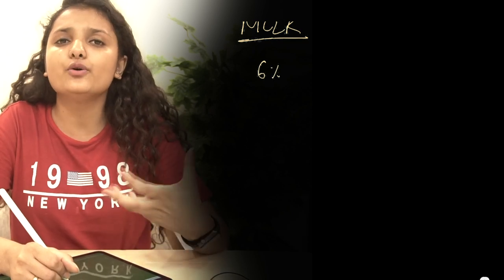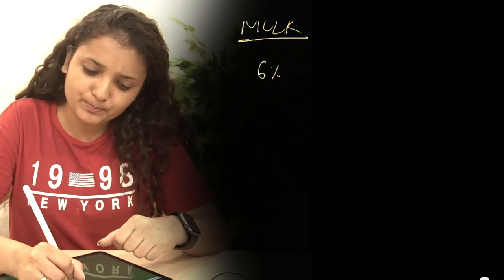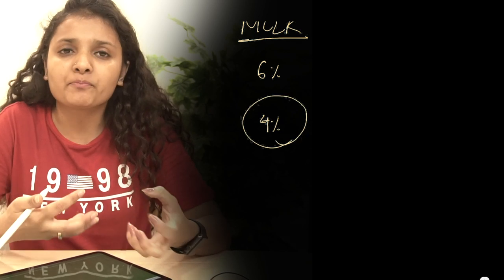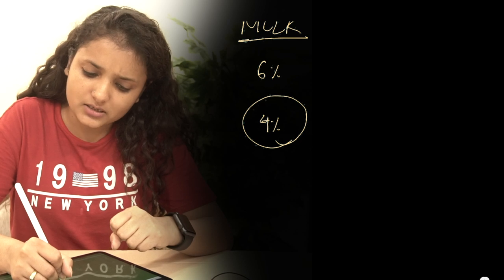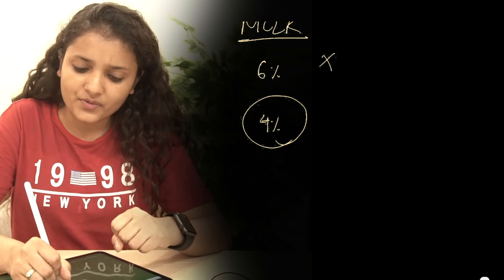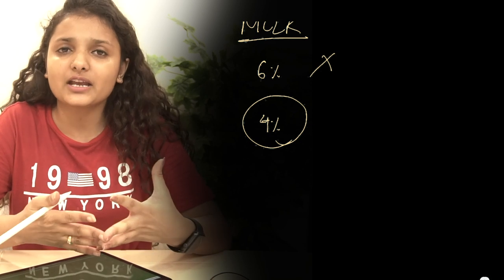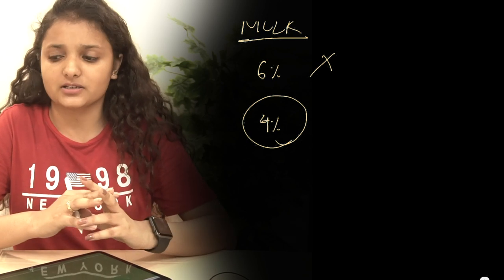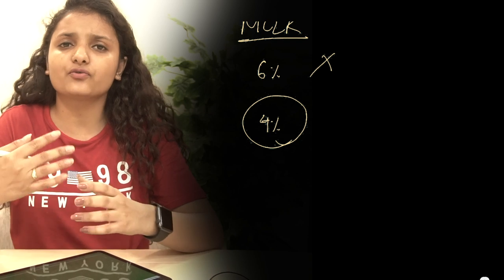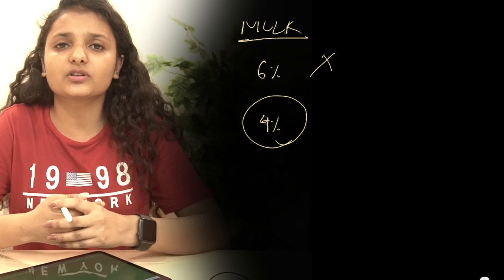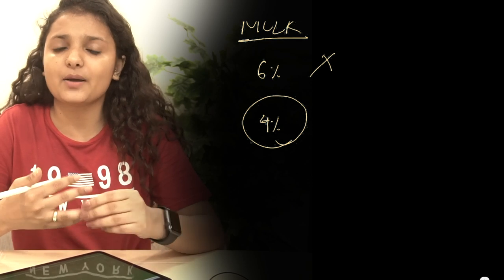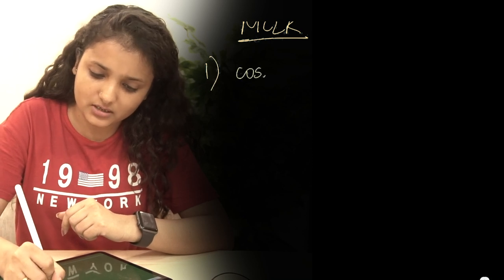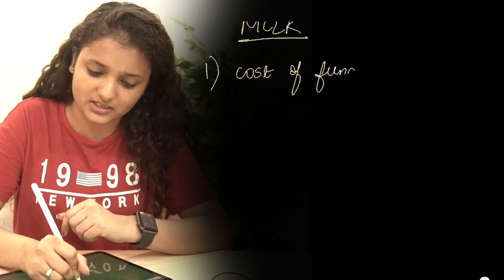To illustrate with an example: earlier a bank used to incur 6% while taking a deposit, but now it incurs only 4%. So this 4% will be included for the calculation under the MCLR system and the 6% has no role to play. Under MCLR there are also four components. The first is the marginal cost of funds as already discussed. The second is negative CRR — same concept as in the base rate system.